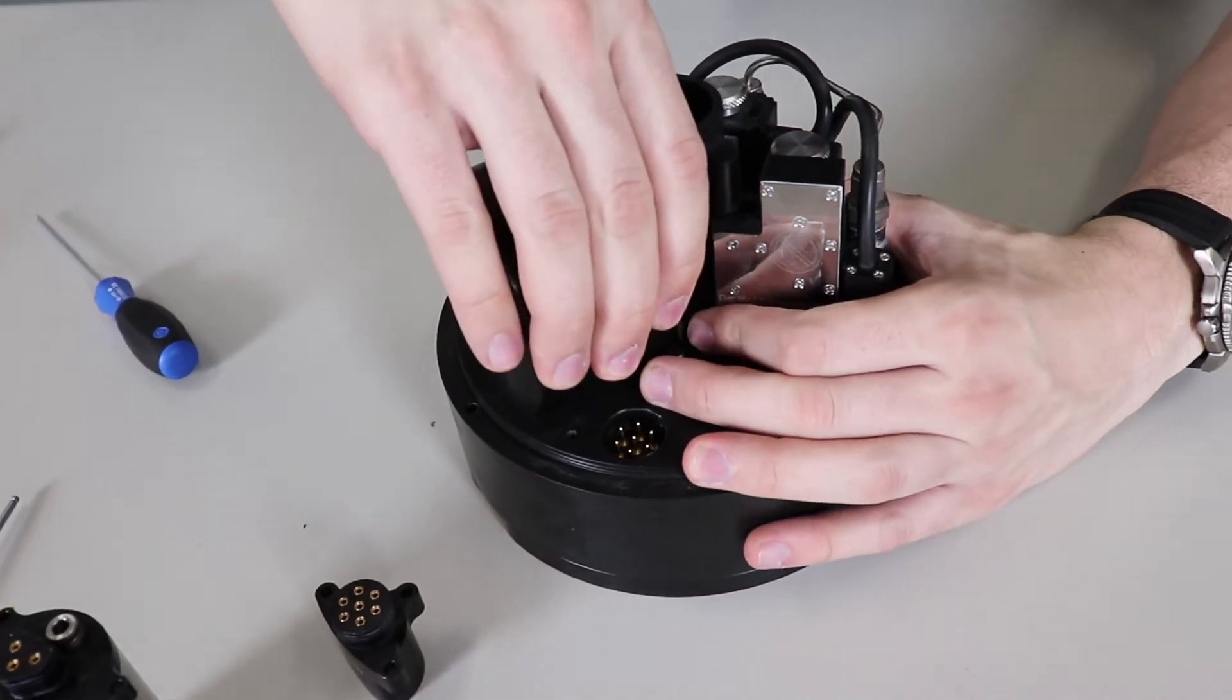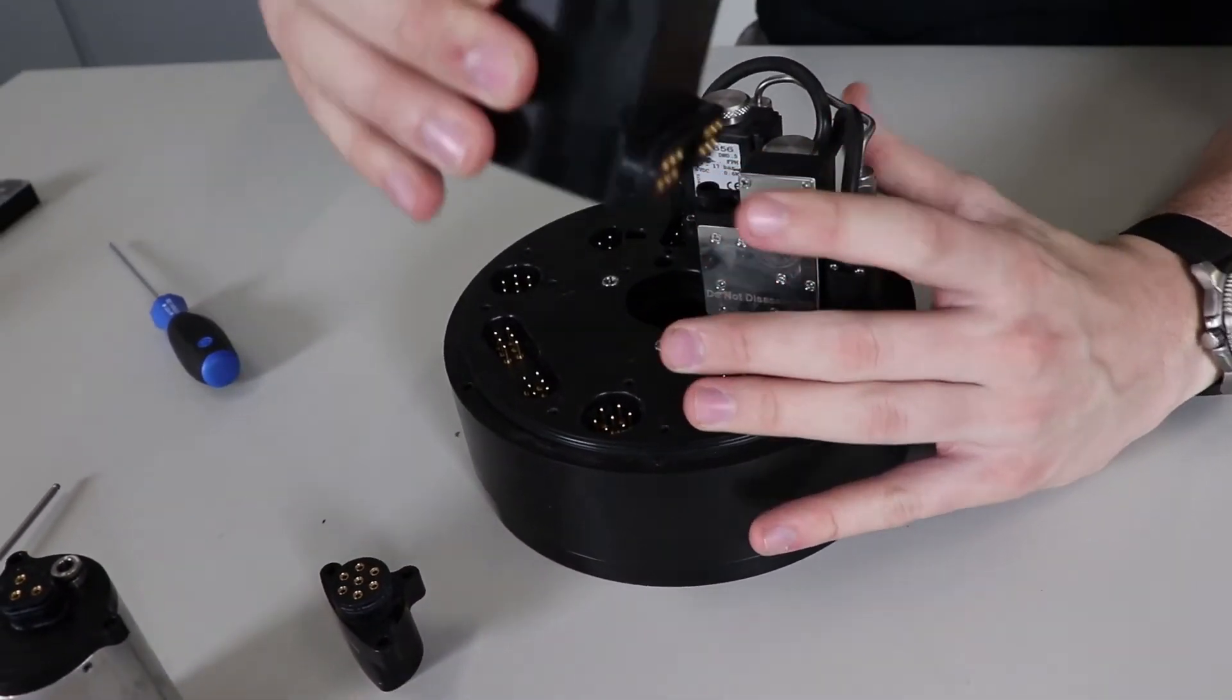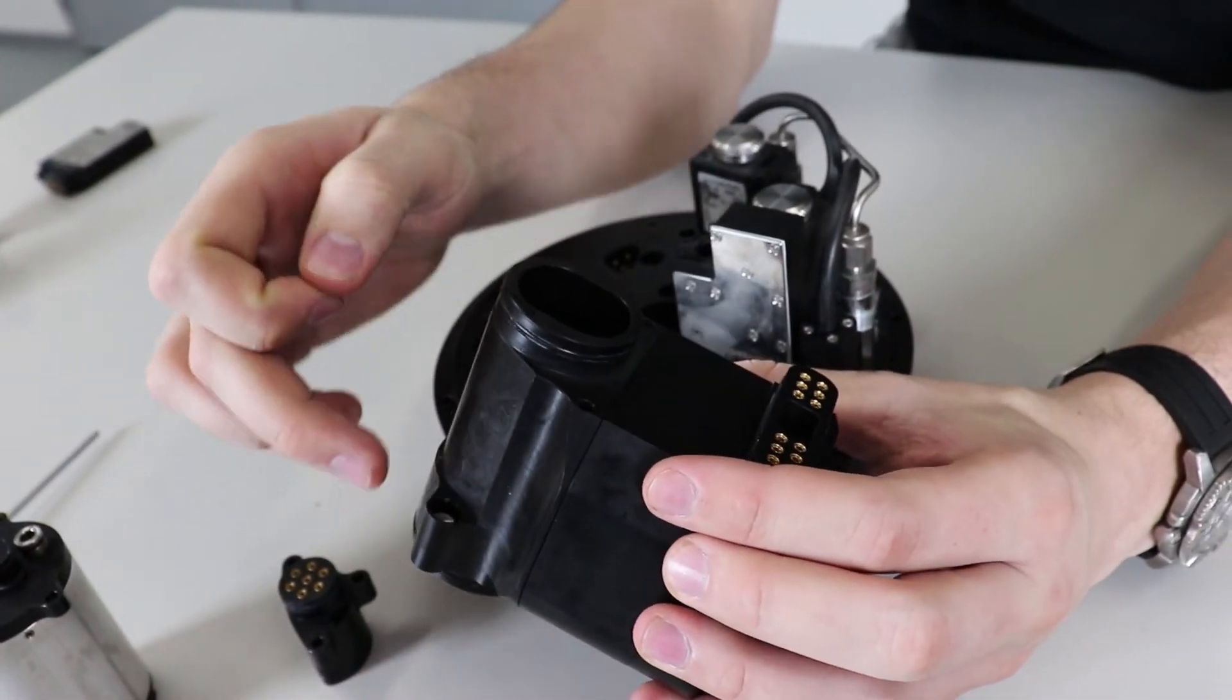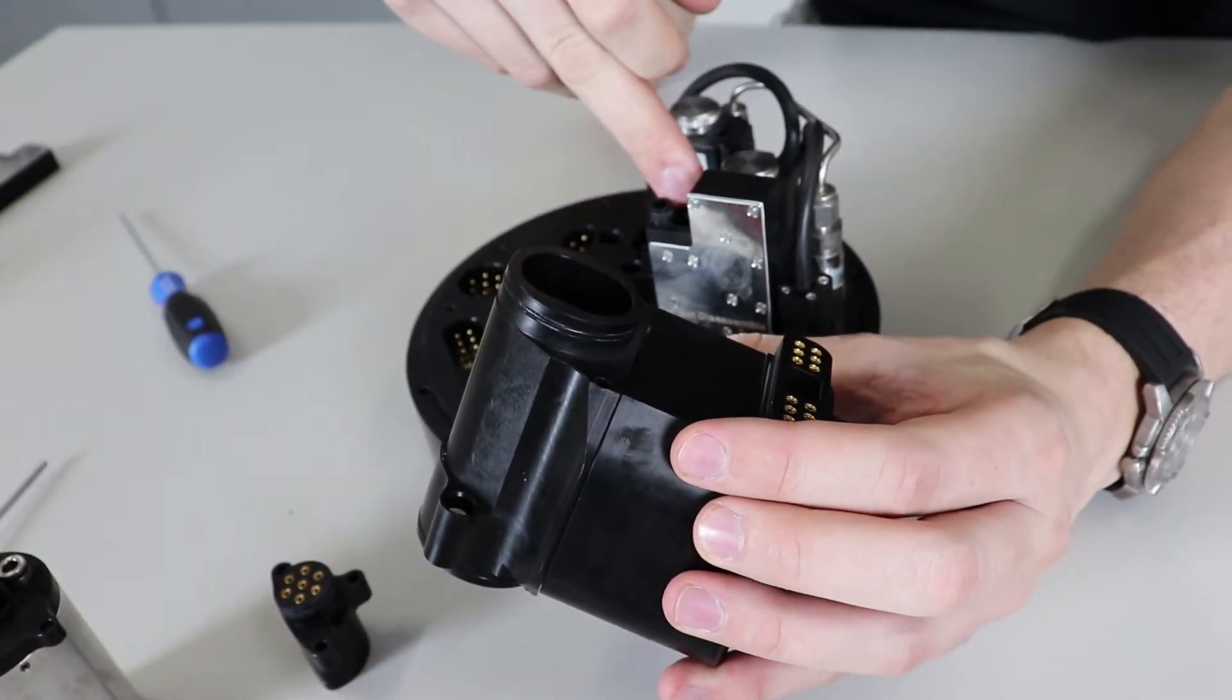Next we have the housing for oxygen sensors. There are four oxygen sensors inside, and right here we have inlets for helium sensors.